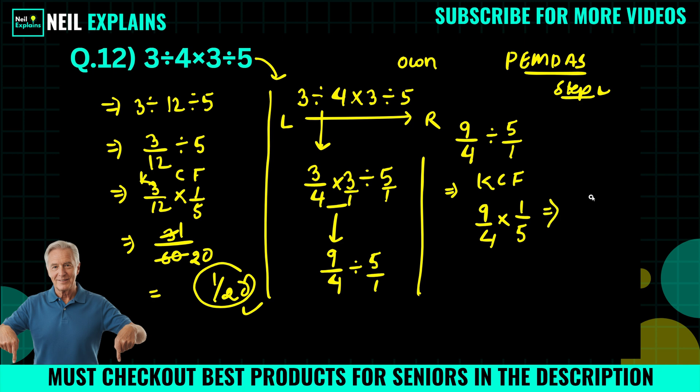Or we can simply write 9 times 1 over 4 times 5, that will be 20. So here 9 by 20 is the right answer.